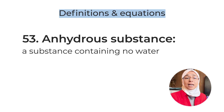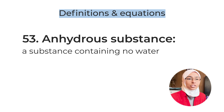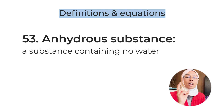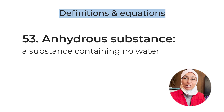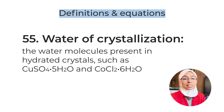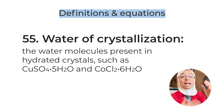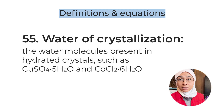Definition number fifty-three: anhydrous substance — a substance that contains no water. In contrast, a hydrated substance is chemically combined with water. Two important examples are hydrated copper sulfate and hydrated cobalt chloride. Definition number fifty-four: water of crystallization — water molecules present in the hydrated crystals. Examples are hydrated copper sulfate and hydrated cobalt chloride. Definition number fifty-five: single displacement reaction — the more reactive element displaces the less reactive one from its compound, true for both halogens and metals.